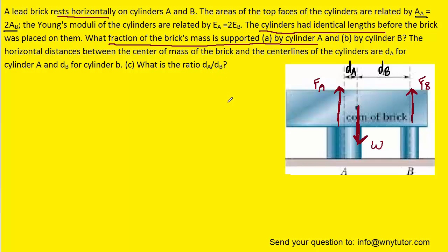For part C, to solve for the ratio, we can look at the torques about the center of mass of the brick, treating this point as the pivot. Since the weight of the brick passes through that pivot, we will exclude the torque produced by the weight. We will consider the torque produced by FA and the torque produced by FB. Those two torques must be equal in magnitude because the brick is in equilibrium.